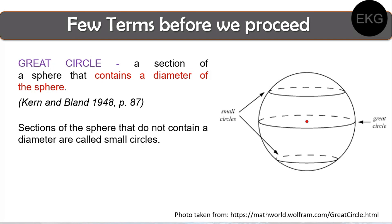A few terms before we proceed. First is the great circle, which is a section of a sphere that contains a diameter of the sphere. Sections of the sphere that do not contain a diameter are called small circles. The circle at the center of the illustration is known as the great circle. Anything that is not at the center, we call small circles. To better illustrate this, imagine you are slicing an onion — the circles created near the top are small circles, but when you reach the very center, that's when you are creating a great circle.